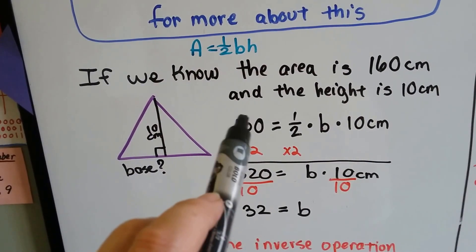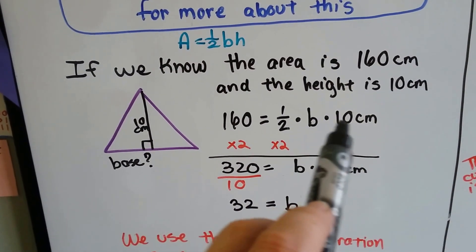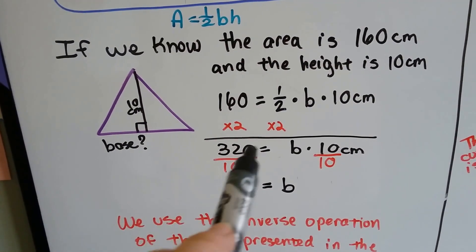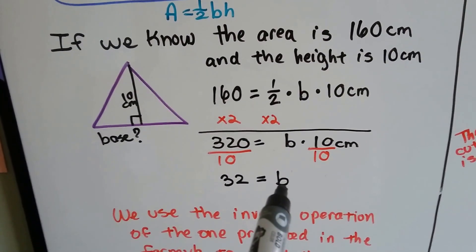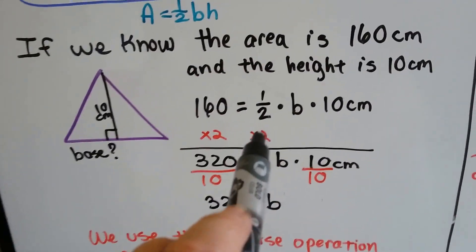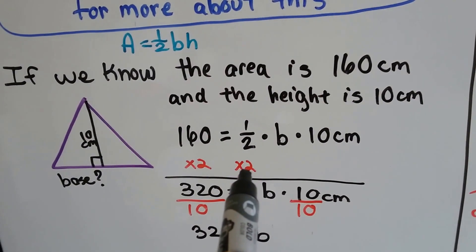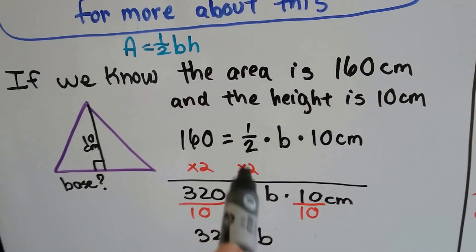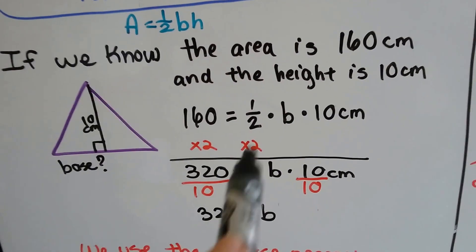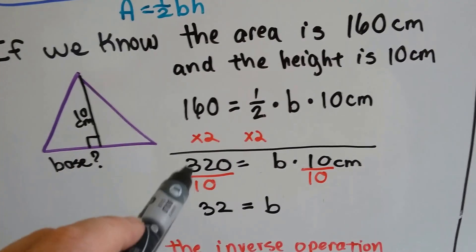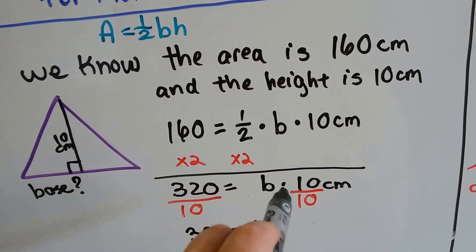The area is 160, so now we've got 160 is equal to half the base times — well, we know the height is 10 centimeters, so it's times 10 centimeters. We use inverse operations to help us slowly get the variable b to one side of the equal sign so that we have the solution. The first thing we do is the opposite of a half is to double it. The opposite of cutting something in half is multiplying it by 2. So we're going to multiply both sides by 2 to cancel out the half. So 160 times 2 is 320, and we're left with 320 is equal to b times 10 centimeters.